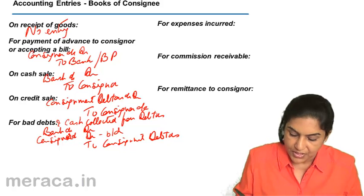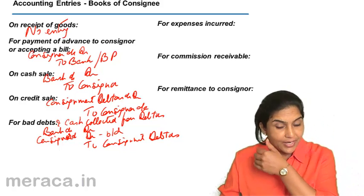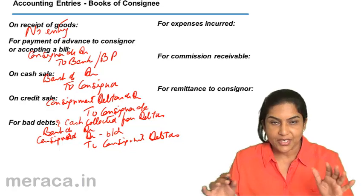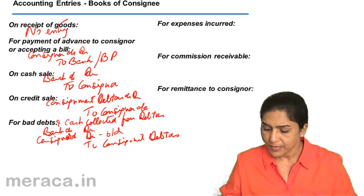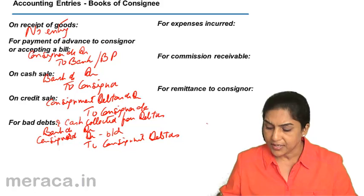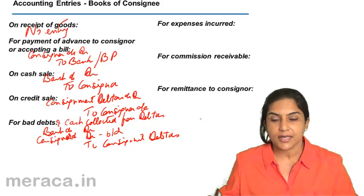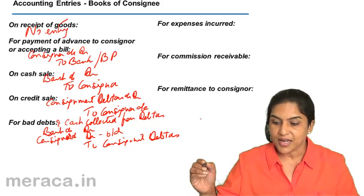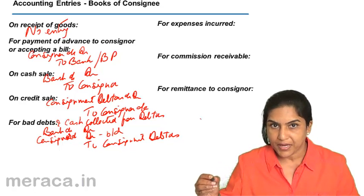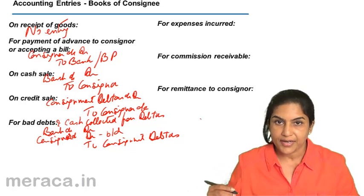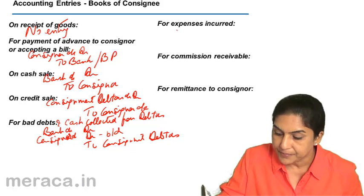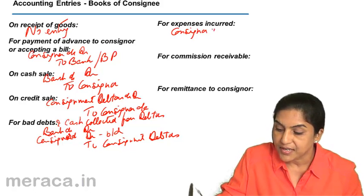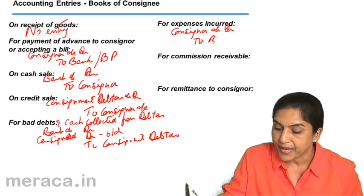This is all in the books of the consignee, so the consigner account is either debited or credited depending on the situation. For expenses incurred by the consignee: these expenses are to be borne by the consigner, but the consignee has paid the money, so cash has gone out — credit bank. The entry is consigner account debit to bank.